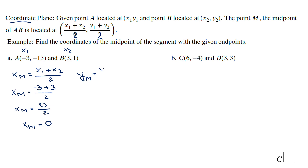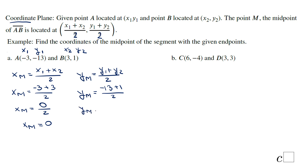For the y-coordinate, we add the y-values and divide by 2: y1 is negative 13, y2 is positive 1, so negative 13 plus 1 divided by 2 gives us negative 12 divided by 2, which equals negative 6. So the midpoint of segment AB is (0, negative 6).